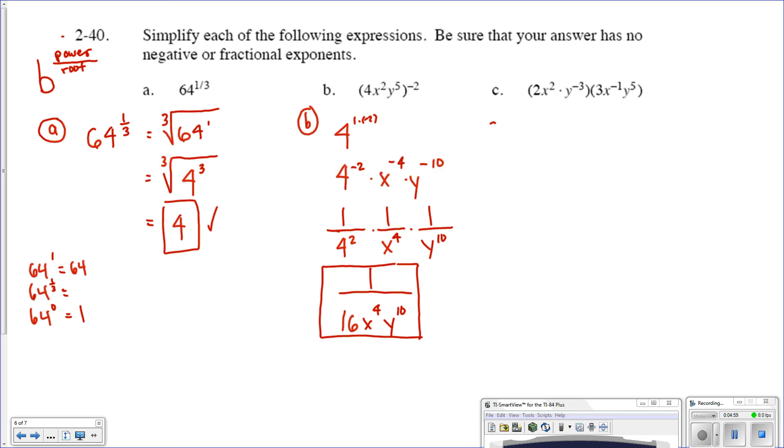Letter C. Right now, this statement says 2 times x squared times y to the negative third. This is all being multiplied by 3 times x to the negative first times y to the fifth. I'm using my associative property of multiplication to re-sort these, re-organize them. And then my commutative property too, because I'm going to rearrange them. I can do 2 times 3, so I'm going to end up with 2 times 3 times x squared times x to the negative first times y to the negative third times y to the positive fifth.